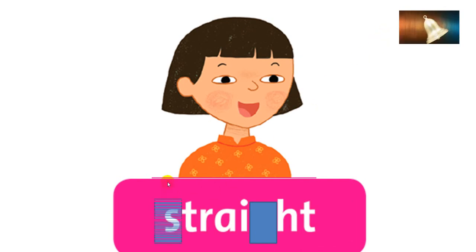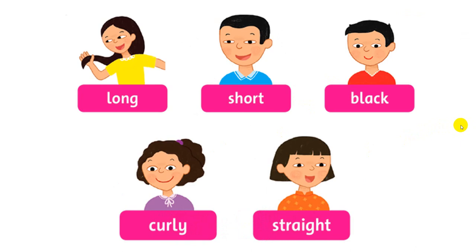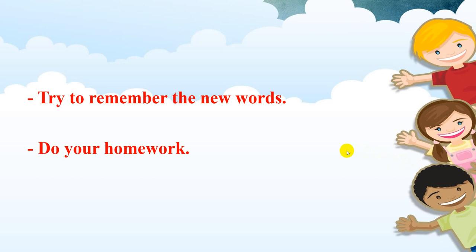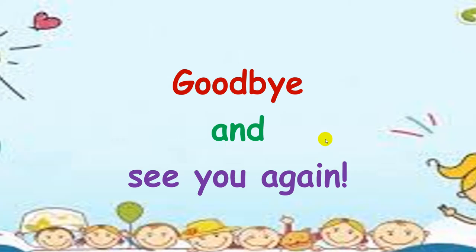The first missing letter is S and the next one is G. Okay, today we learned five words. Now let's try to read and remember them one more time: long, short, black, curly, straight. Please try to remember the new words and do your homework. Goodbye and see you again!